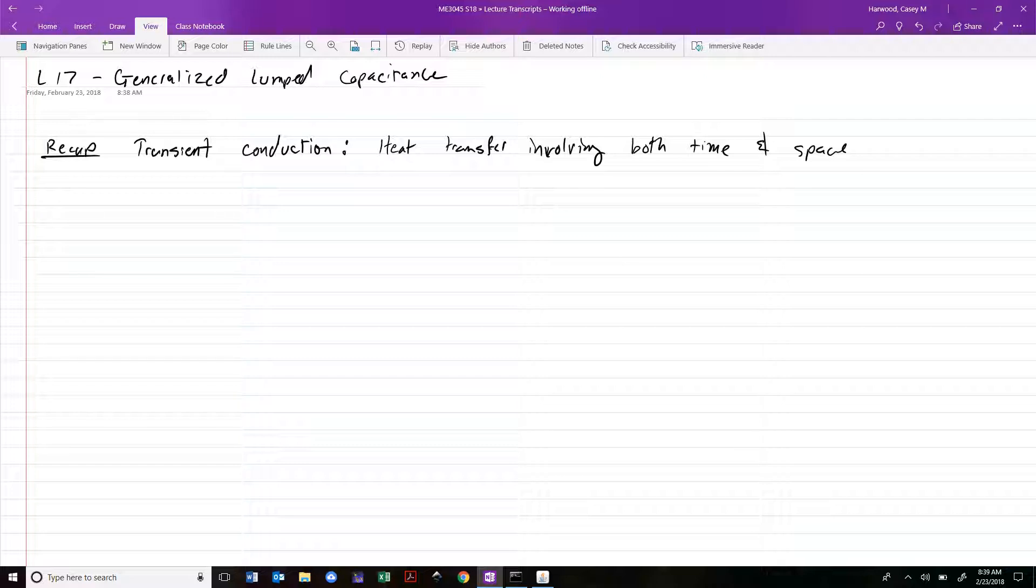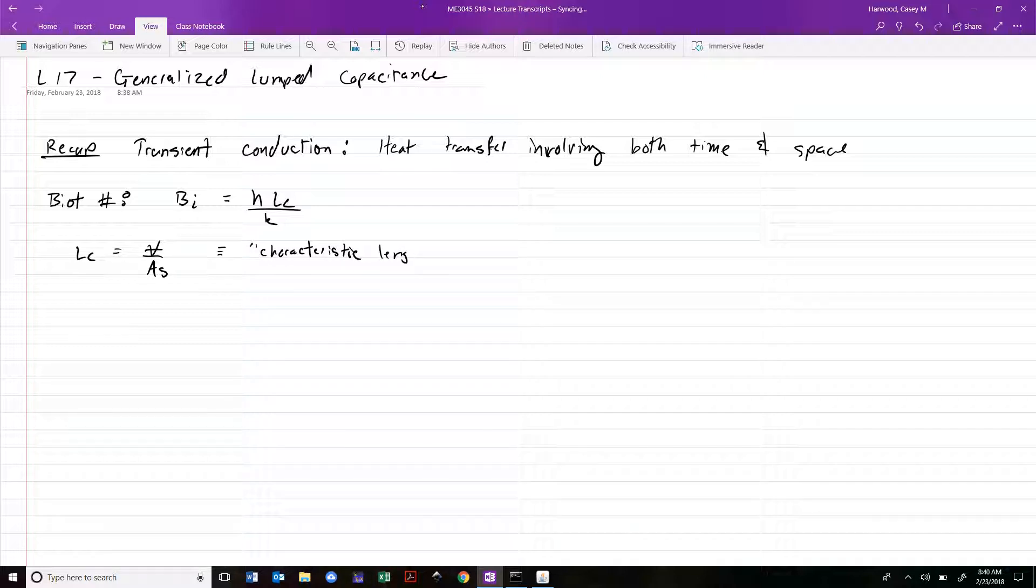The first thing you should do is calculate this key parameter called the Biot number, defined as BI equals H times LC over K, where LC is the volume of the object over its surface area, known as the characteristic length. If the object we're considering is like a planar wall, the volume divided by surface area gives the thickness of that wall.